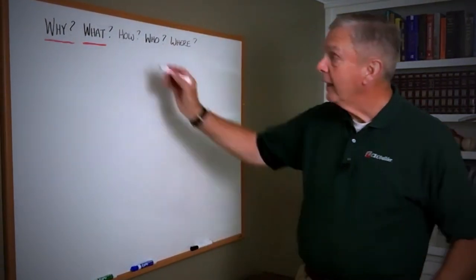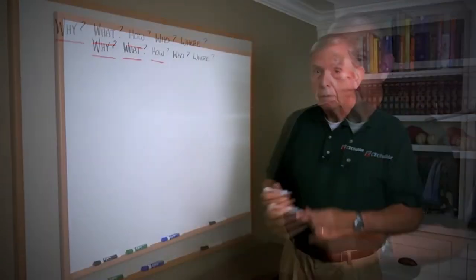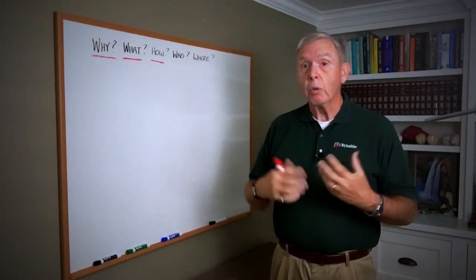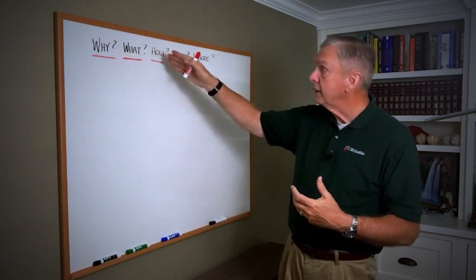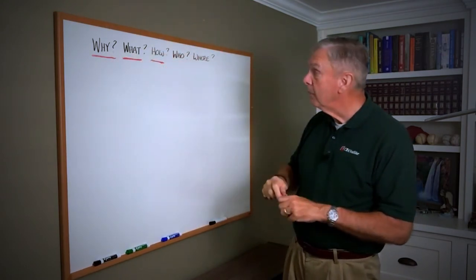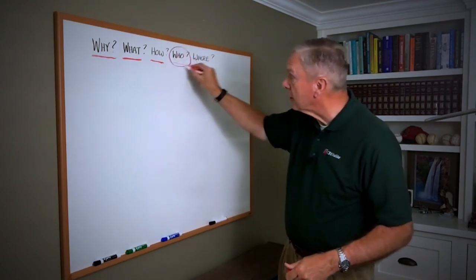Now that goes to the how, what is the operational model that will make it happen? How do we make money? So we're going from why to what to how, but then most critically, and I'll even circle that one.